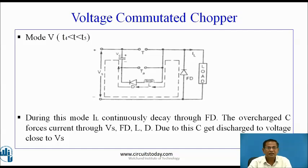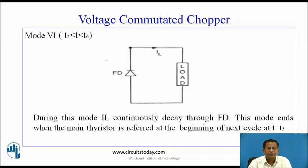Mode 5: T is greater than T4, less than T5. During this mode, the load current IL continuously decays through the freewheeling diode FD. The overcharged capacitor forces current through Vs, the freewheeling diode, L, and D. Due to this, capacitor C discharges to a voltage close to Vs. Mode 6: T is greater than T5, less than T6. During this mode, the load current continuously decays through the freewheeling diode. This mode ends when the main thyristor is re-triggered at the beginning of the next cycle at T equal to T5.